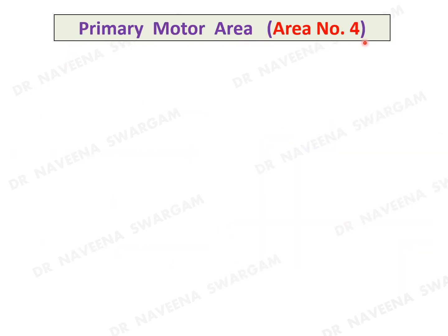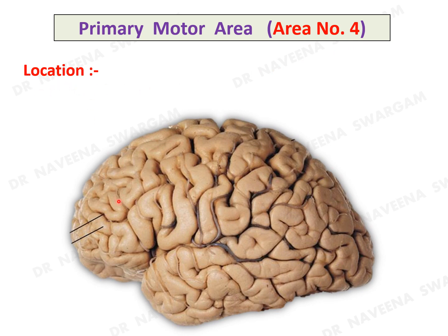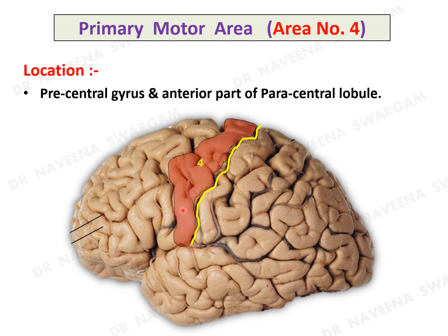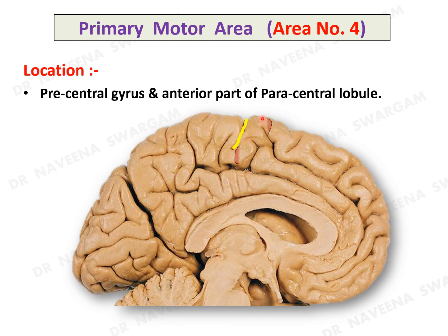Primary motor area, area number 4. Here is the superolateral surface of the left cerebral hemisphere and here is the central sulcus. The primary motor area lies in the precentral gyrus, which also extends into the anterior part of the paracentral lobule in front of the central sulcus on the medial surface.